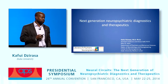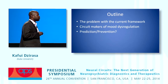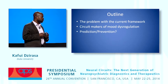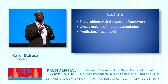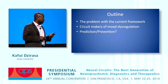Since this is a talk about stress, I thought I would start with my most stressful slide. As an outline for tonight, I'll talk about the problem with the current framework for how we think about neuropsychiatric illness, and how an evolution in that framework may lead us to a better understanding of how neurocircuits participate in these disorders. And finally, can we move into a framework where we can predict illness and prevent it instead of just treating symptoms?